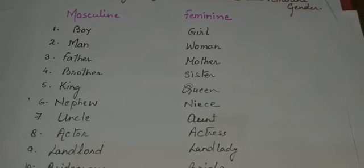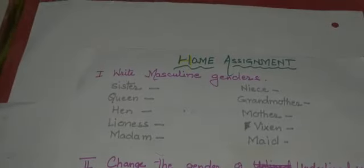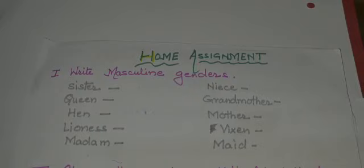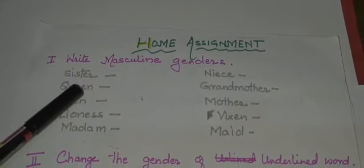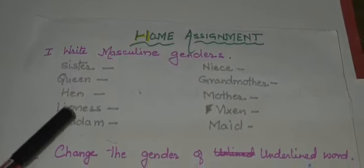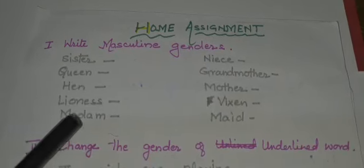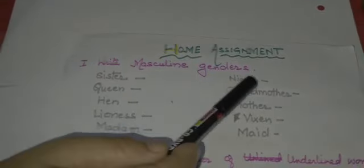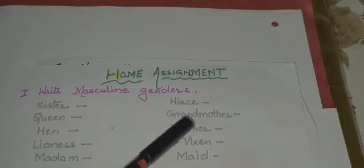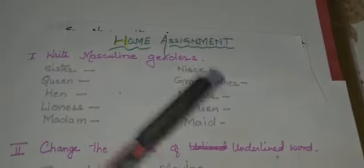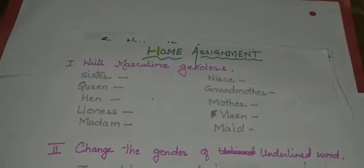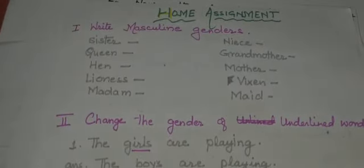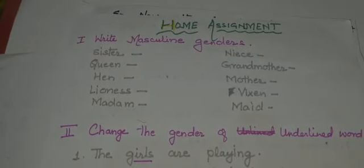There is some home assignment that you have to do. First, you have to write the masculine genders of these words: sister, queen, hen, lioness, madam, niece, grandmother, mother, vixen, and maid. Some words you can find from the exercises we did previously, and some words you have to find yourself with the help of your parents.